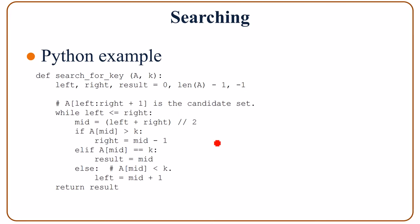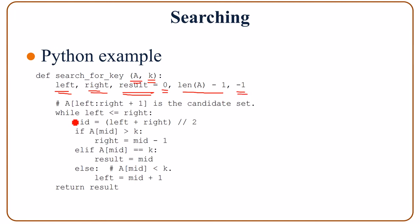This is a Python implementation, given an array a and the value k. Left is initialized with 0. Right is initialized with length of a minus 1. And result is initialized with negative 1, which means not found. While left is less than or equal to right — this means we keep doing this as long as left hasn't crossed to the other side of right.